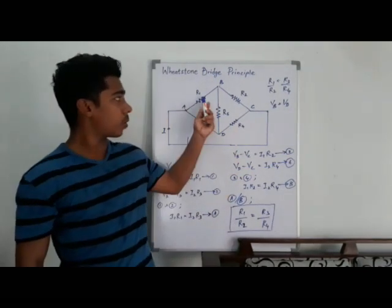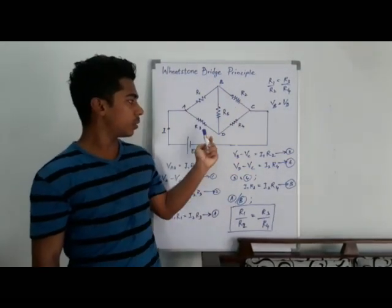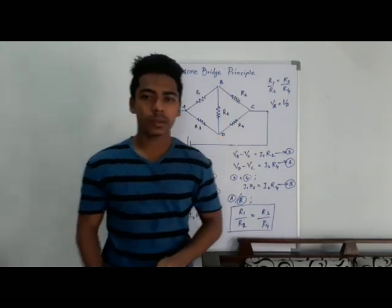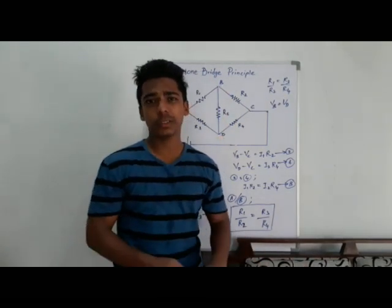So I can write if R1 over R2 is equal to R3 over R4, then VB is equal to VD. So that is the Wheatstone Bridge Principle.